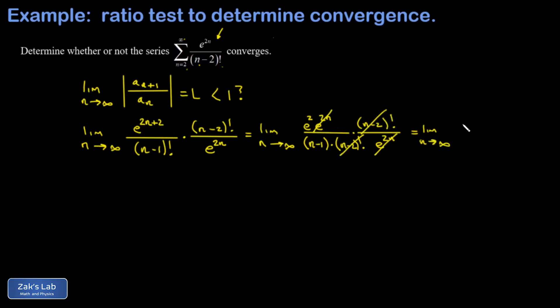I'm left with just the limit as n goes to infinity of e squared — which is a constant — divided by n minus 1. A constant divided by a denominator that's becoming infinite unambiguously goes to zero. And because this limit goes to a number less than 1, the ratio test guarantees that the infinite series converges.